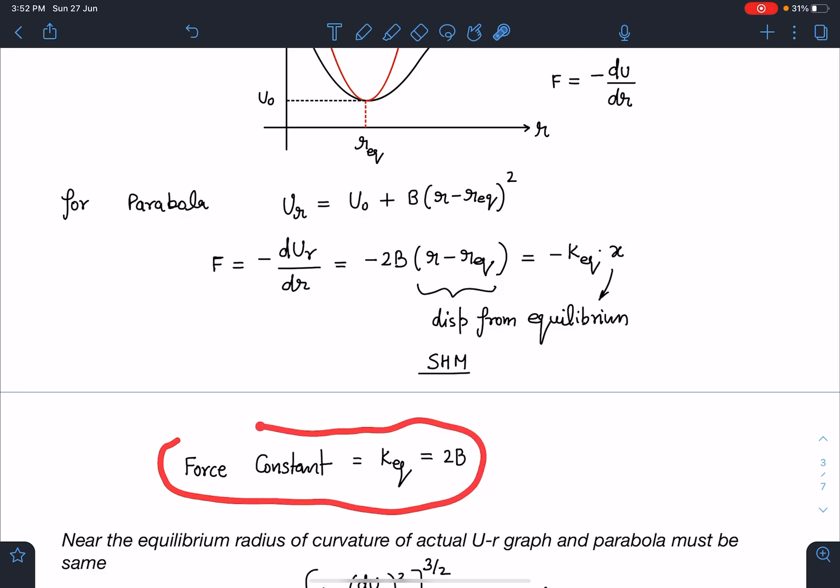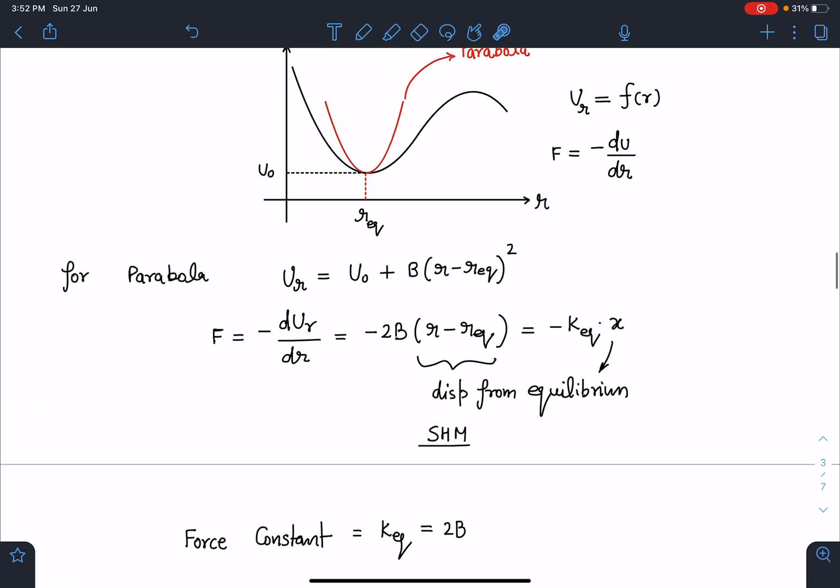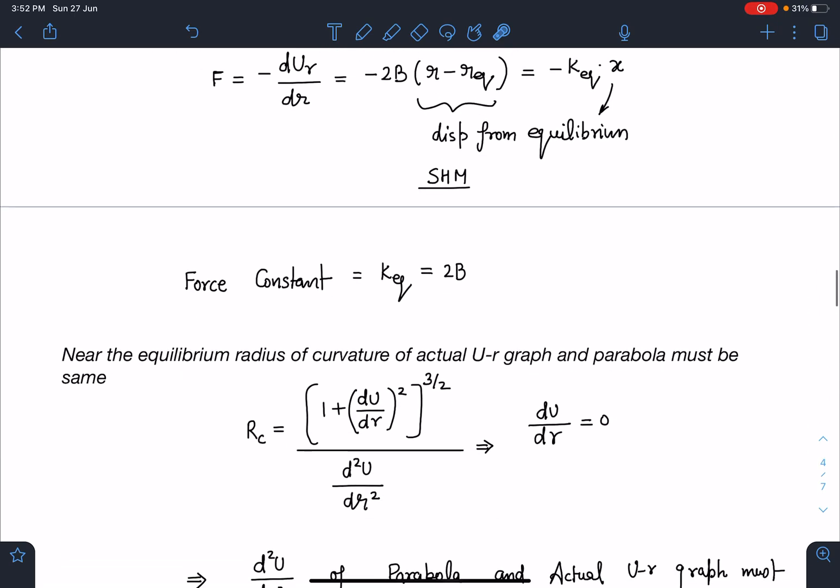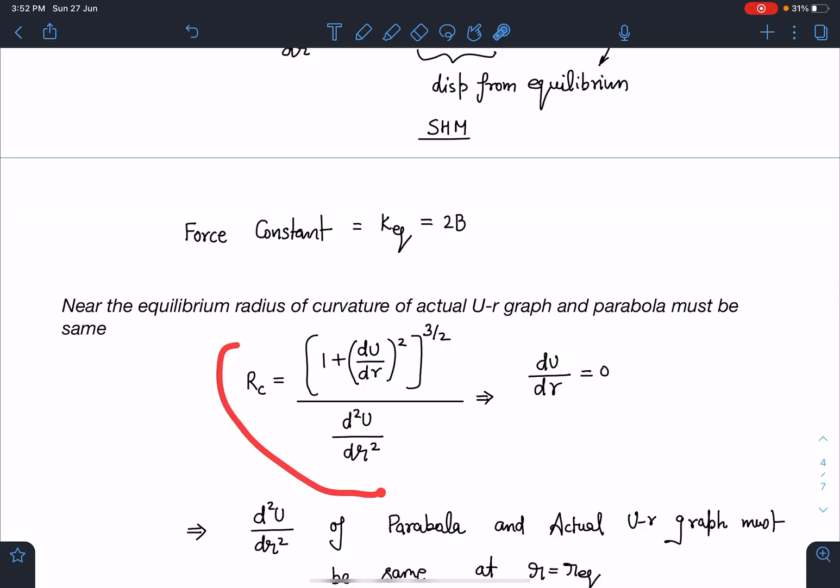Also, near this equilibrium point, this parabola and this curve - the actual potential function - they are touching, so their radius of curvatures must be same. Radius of curvature formula is [1 + (dU/dr)²]^(3/2) divided by d²U/dr². At equilibrium, this term is zero, so radius of curvature of both are same, meaning their double derivatives are going to be same. This is the same result which we get by using Taylor's theorem.